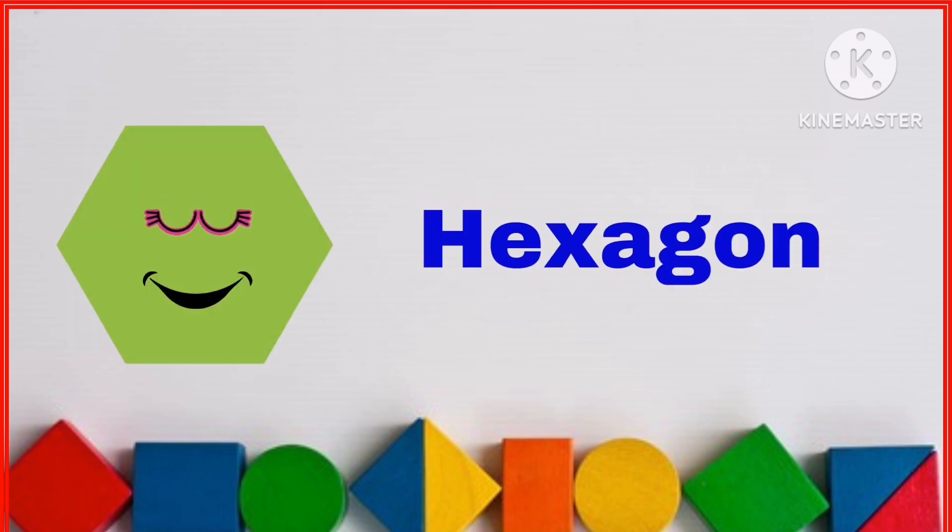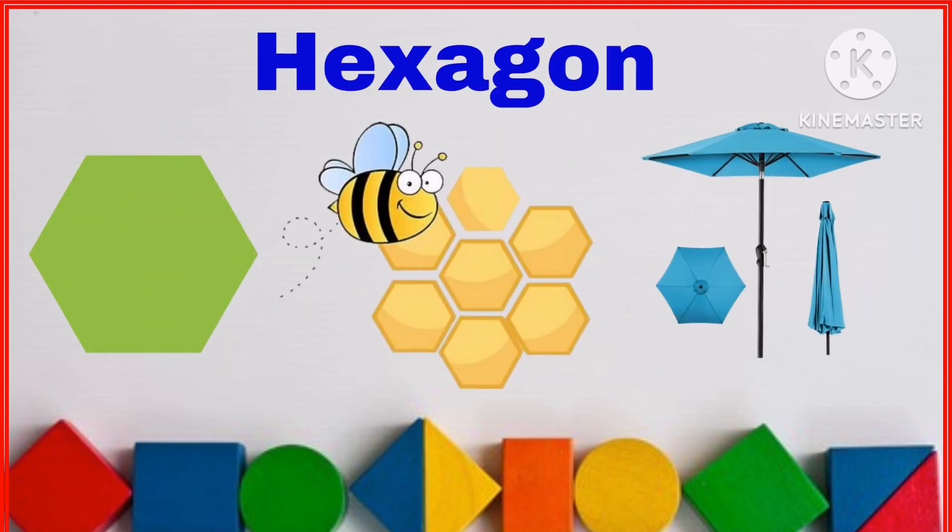I am a hexagon. I have six sides and six corners. Example: honeycomb and nut.